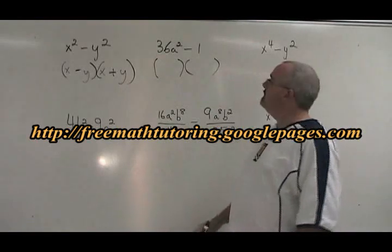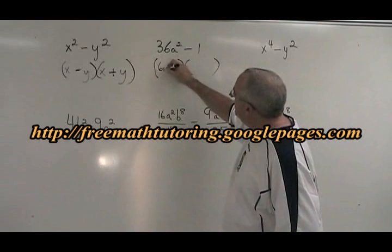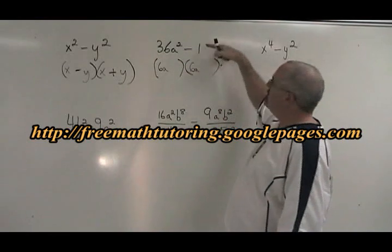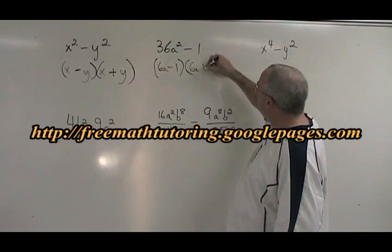Two sets of brackets for the binomials. The square root of 36a squared is 6a. The square root of 1 is 1. One minus sign, one plus sign.